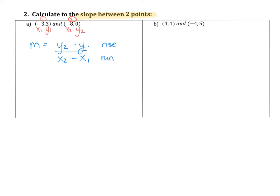So next step, we're just going to take those numbers and we're going to substitute them into the formula. So y2 is 0. We're going to subtract. y1 is 3. On the bottom, x2 is negative 8. We're going to subtract. x1 is negative 3. So that's just subbing the numbers into the formula. And now we're going to do a little bit of simplifying. 0 minus 3 on the top is negative 3.